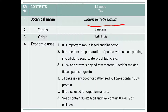Linseed is a most important oilseed crop. It is a rabi season crop — an important rabi oilseed as well as a fiber crop. That means linseed is mostly preferred for both purposes: oilseed as well as fiber purpose.